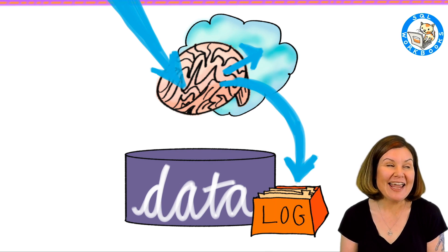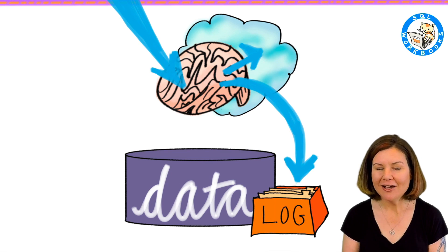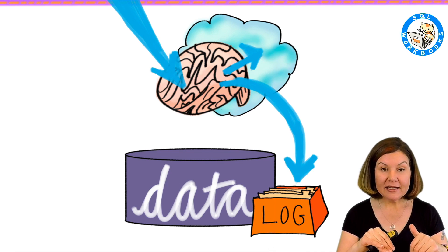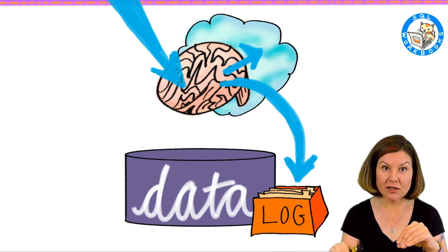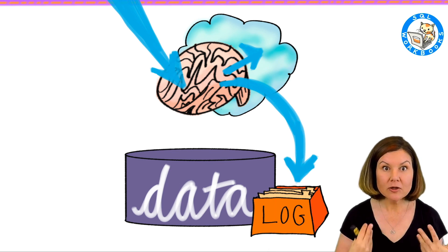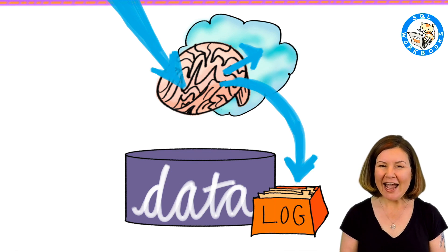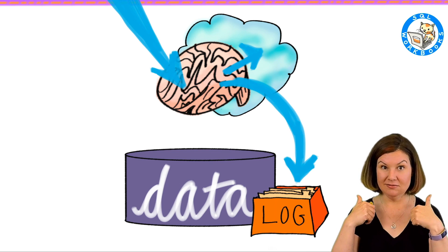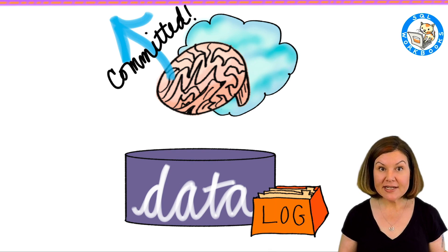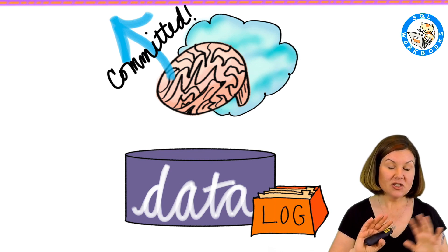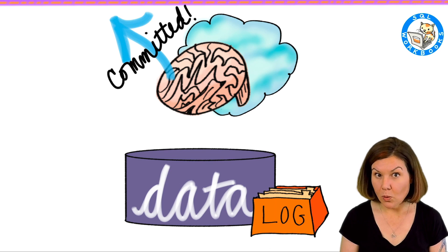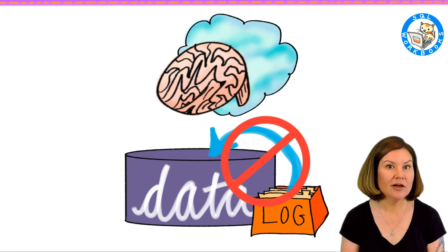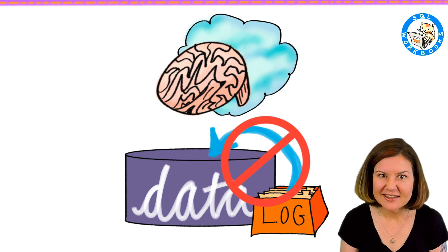SQL Server uses a write-ahead log, or WAL — W-A-L is the acronym for that. So when modifications come in, we write it to memory, and then we write it to the transaction log. The transaction log is a really critical record about what has happened. After we make sure that the transaction log has the data — like the storage system says it's all good — we can then commit the transaction and tell the application, hey, it's all good, your update has been committed. The information about what happened is in memory and in the transaction log. It is not yet in the data files.